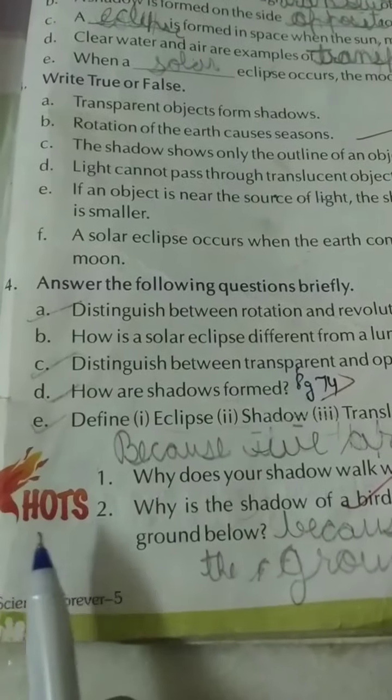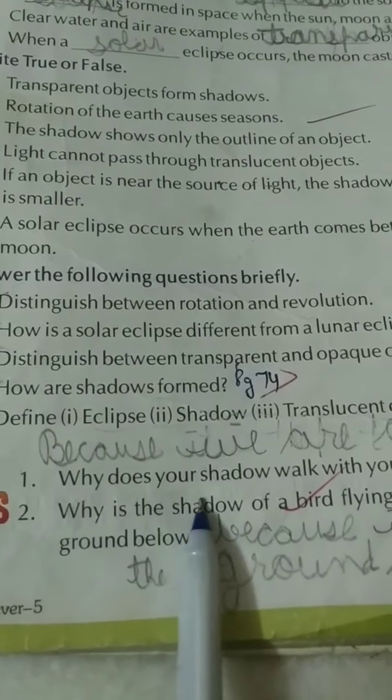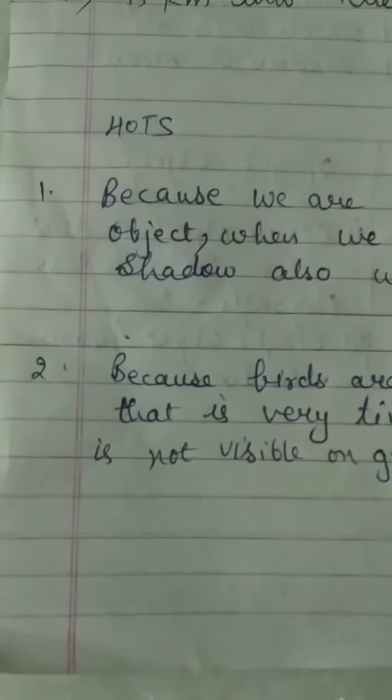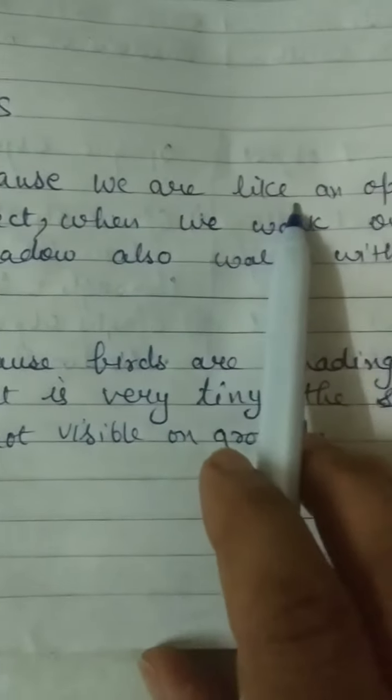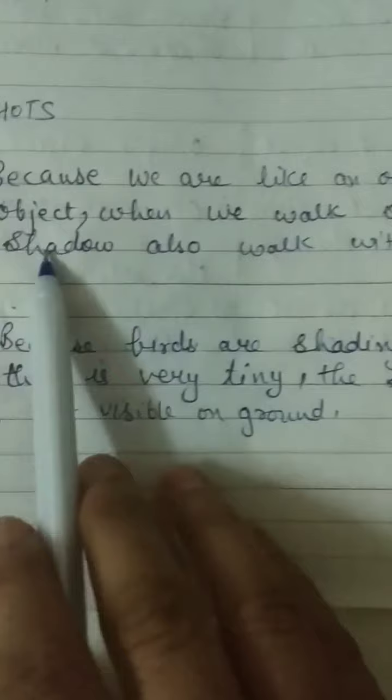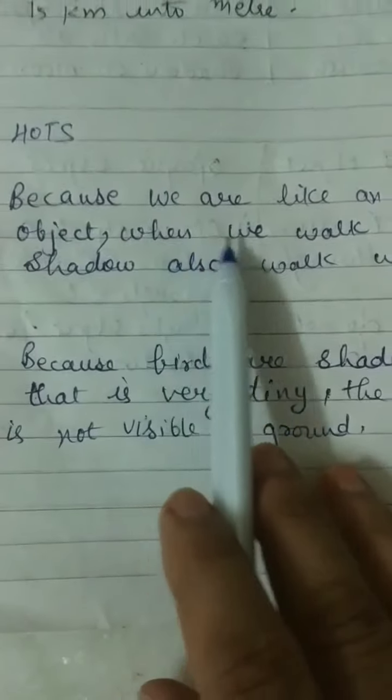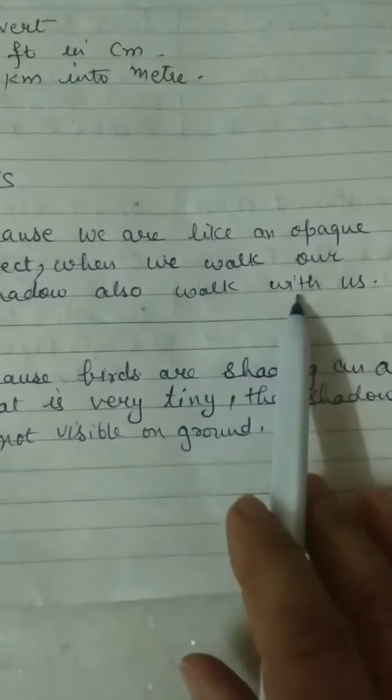Two question parts. Why does your shadow walk with you? Because we are like an opaque object. When we walk, our shadow also walks with us.